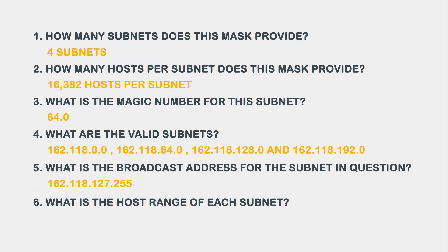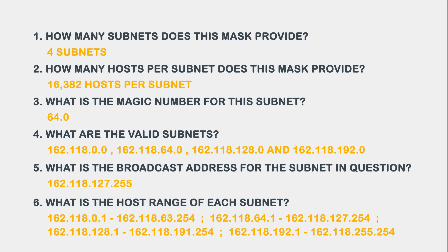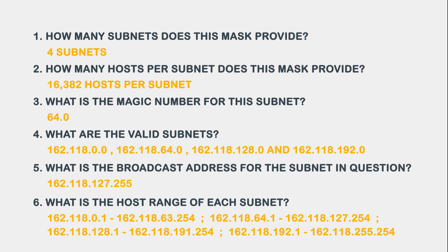Question 6 asks: What is the host range of each subnet? If we look at our chart again, we can easily see the answer. Our host ranges are: for the first subnet, 162.118.0.1 through 162.118.63.254; the second subnet, 162.118.64.1 through 162.118.127.254; the third subnet, 162.118.128.1 through 162.118.191.254. Here is a quick review of the answers for this question.